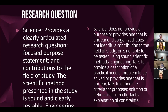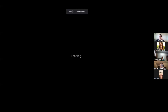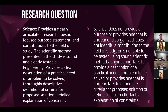Our first criteria is the research question, with a weight of two. The first four criteria are broken up with a science category and an engineering category. The left-hand side shows what a five looks like; the right-hand side shows a one — the two extremes. Out of five for science, students will provide a clearly articulated research question, focused purpose statement, contributions to the field of study, and the scientific method is sound and clearly testable. For engineering at a five, it provides a clear description of a practical need or problem, thoroughly descriptive criteria for the proposed solution, and a detailed explanation of constraints.